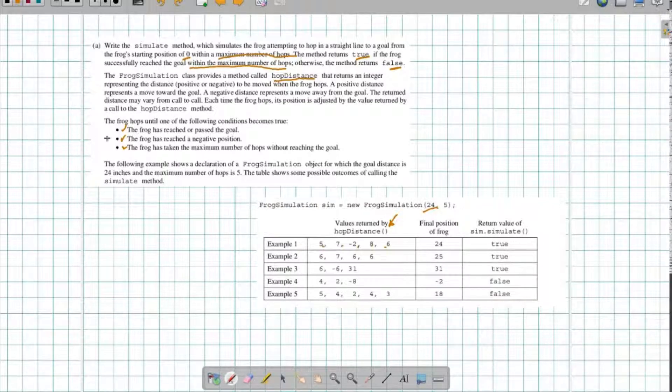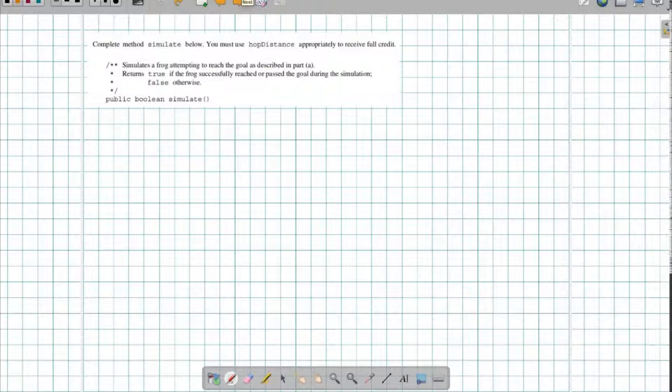So we are going to keep going as long as we're not negative, we still have hops to do, and we haven't reached our goal. And as soon as any of these things happen, we're going to return true or false. Alright, so let's talk about what's happening here.